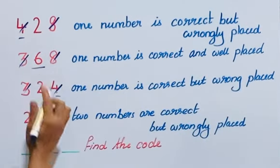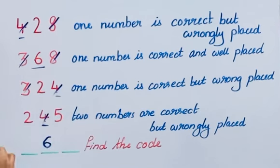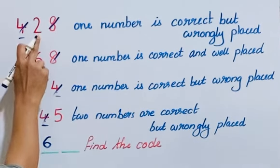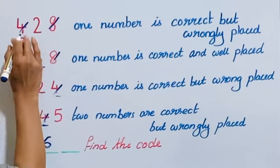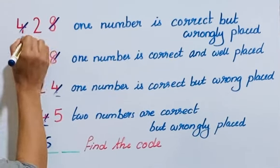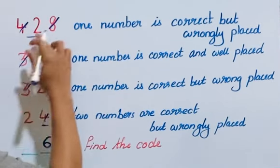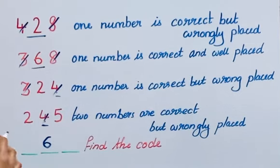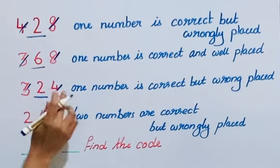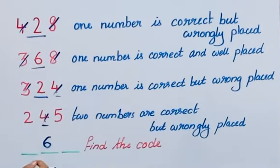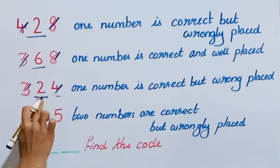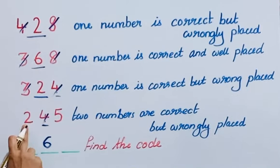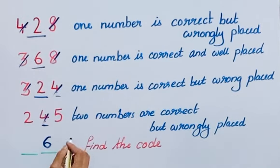Since 6 is well placed in clue 2, let's note its position. Now, 2 is the remaining correct number from clue 3 (324) — it is wrongly placed there. And 2 also appears in clue 4 (245), where it is also wrongly placed. Since 2 can't be in the middle or left position, it must go in the rightmost position.